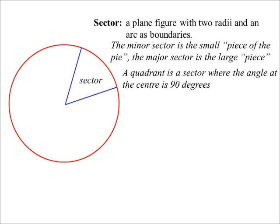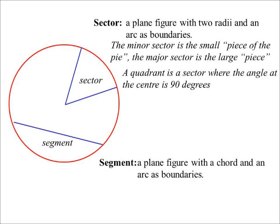A quadrant is also a sector, but the angle at the center is 90 degrees - a quarter of the circle. A segment has a chord and an arc as boundaries, and there are two: the minor segment and the major segment.